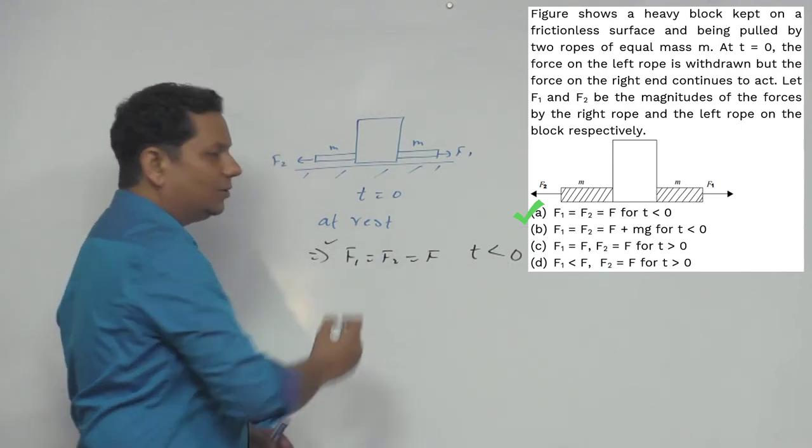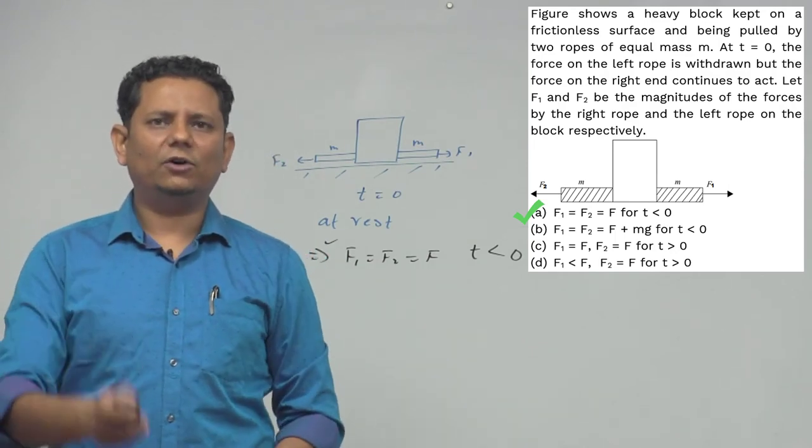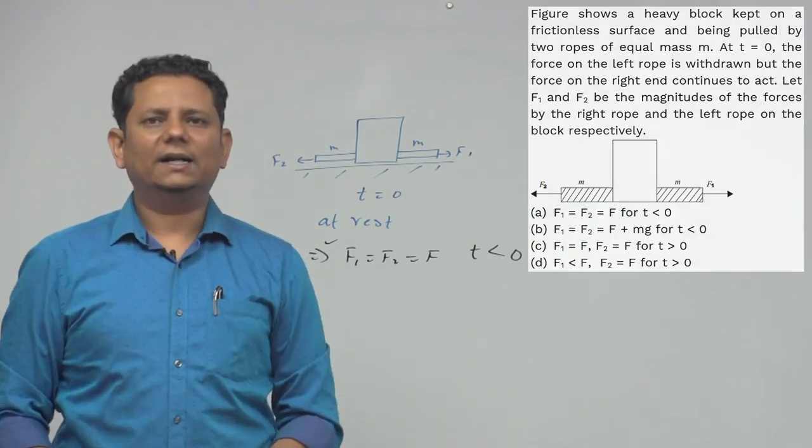So this would be the right choice. Hence option number (a) F1 equal to F2 equal to F for t less than 0 would be the correct choice.